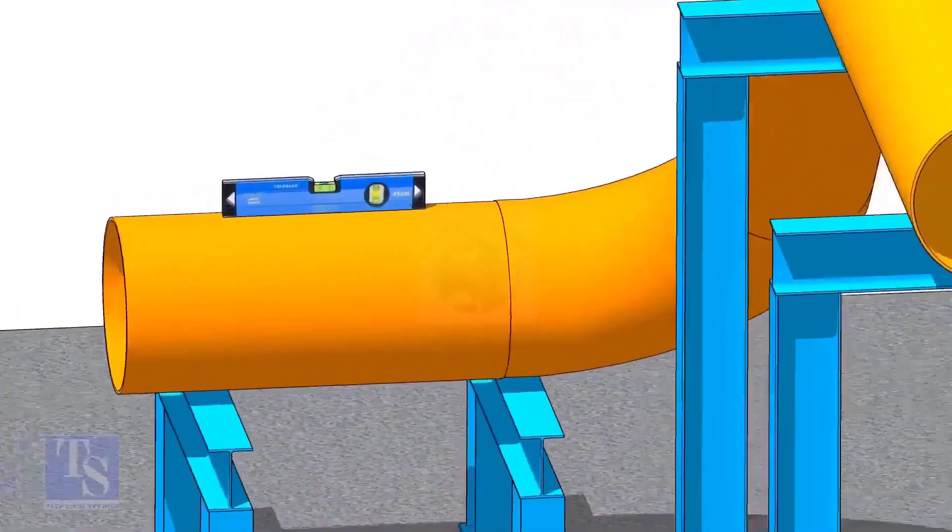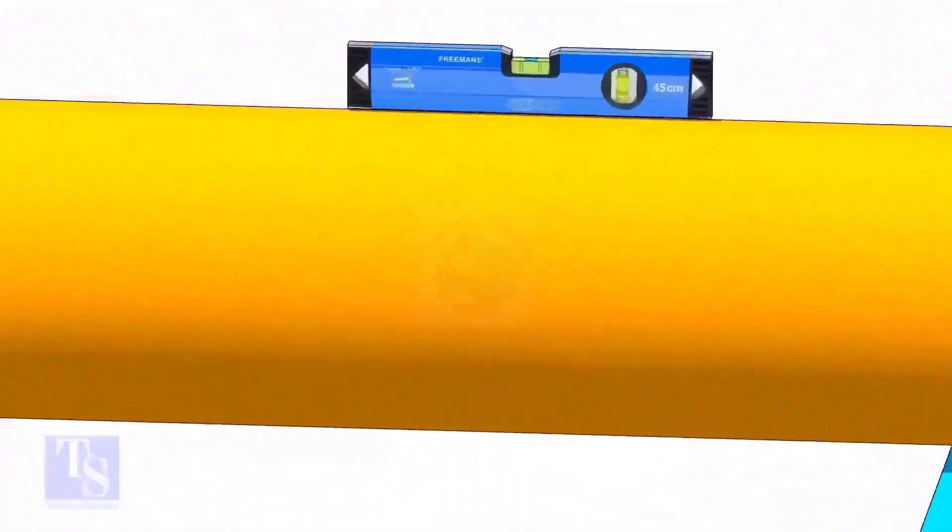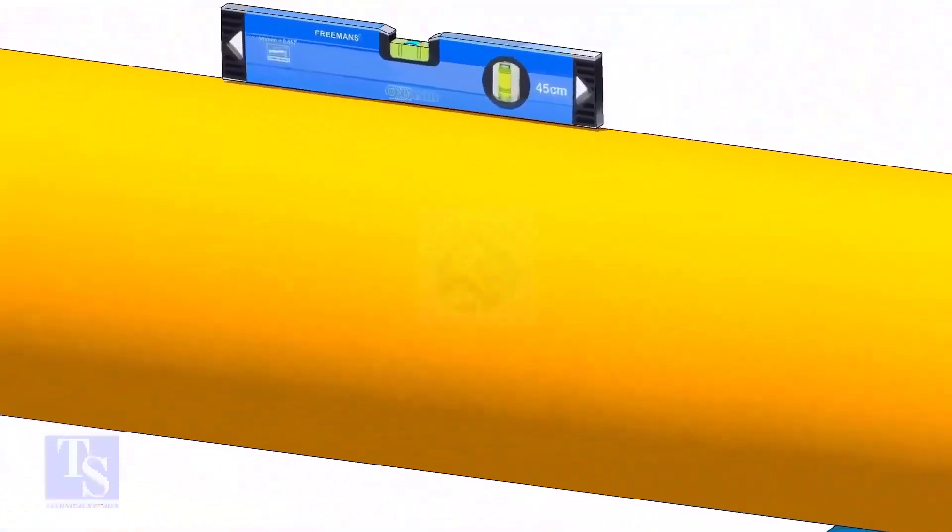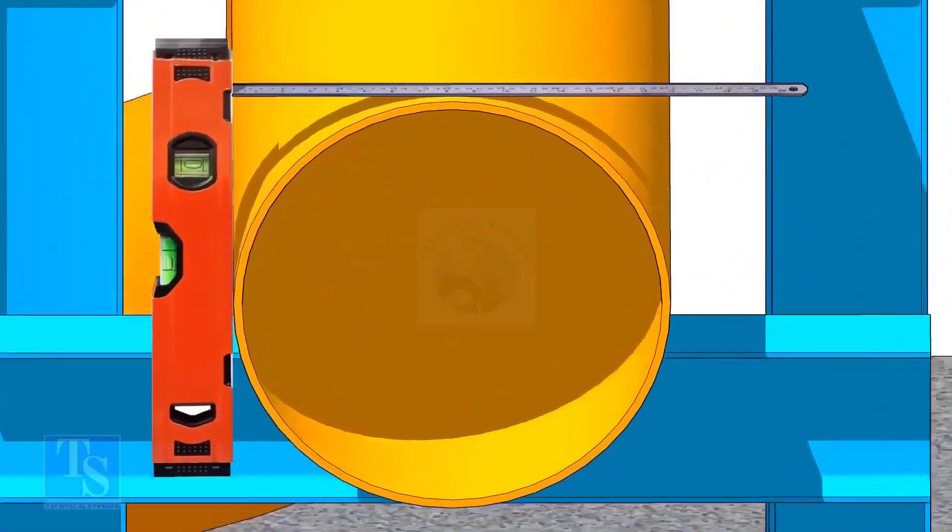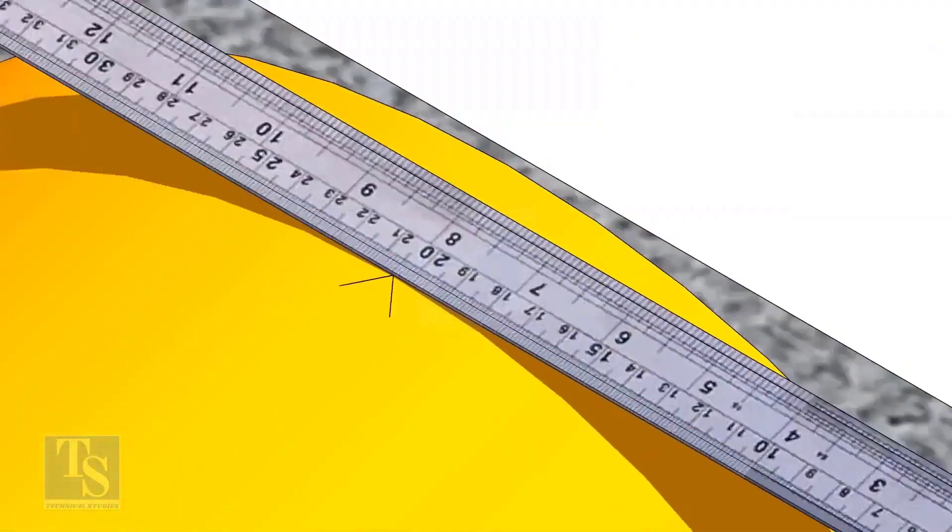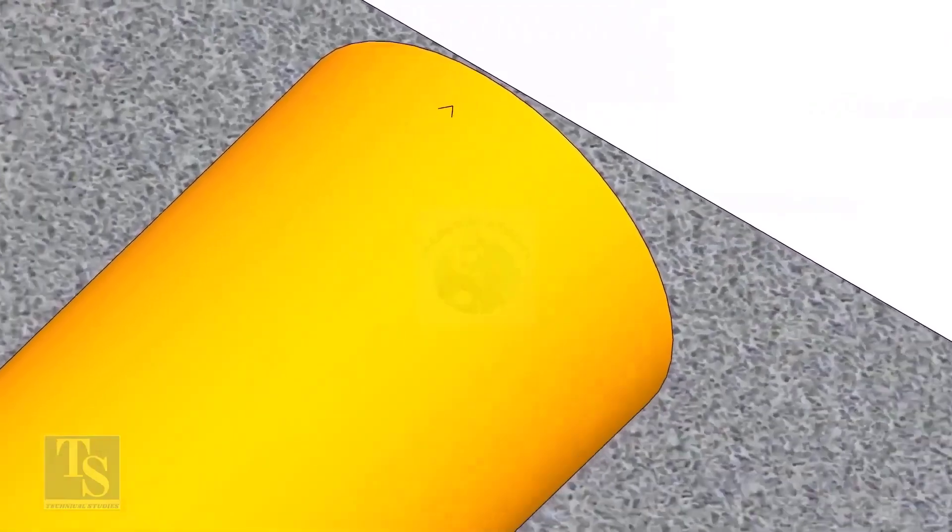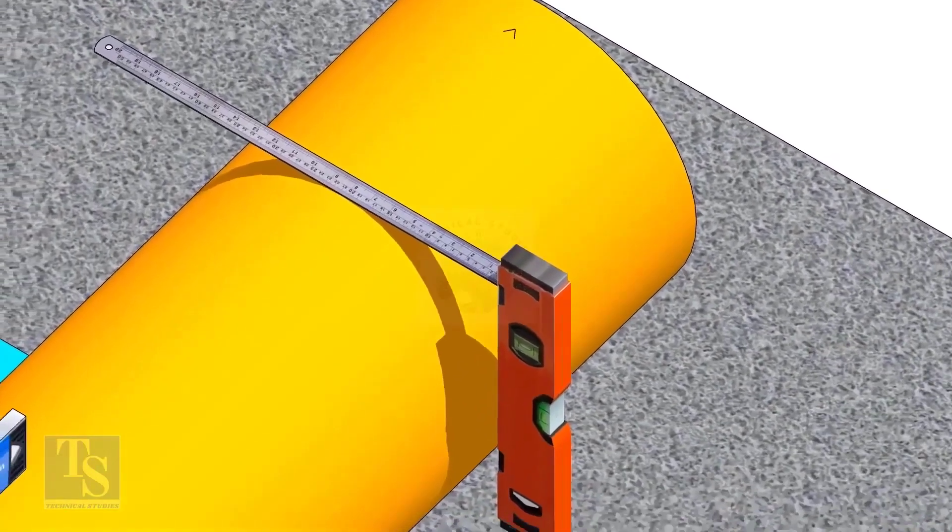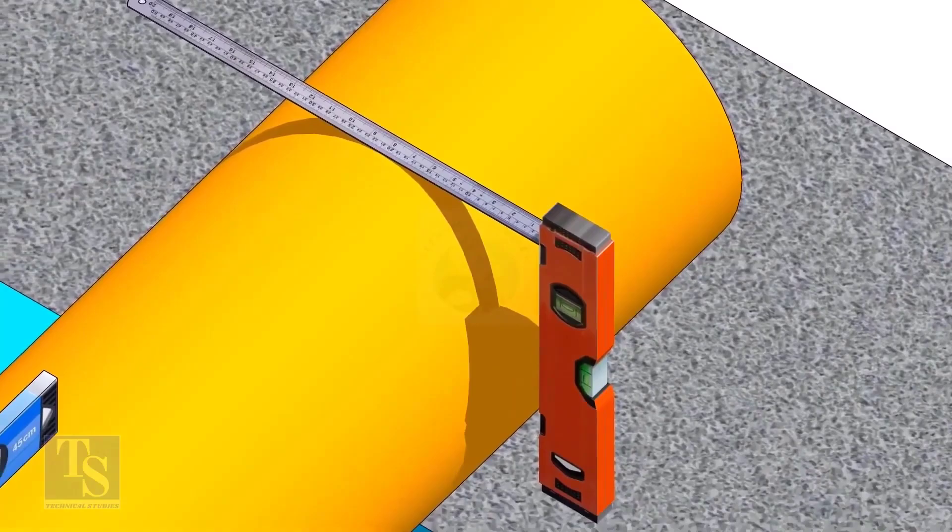After leveling the pipe, mark the center line. Don't forget to punch mark this line. Mark half OD at 300mm apart. This pipe OD is 406mm, so mark 203mm from the vertical level bottle, on the top of the pipe. And draw a line connecting these marks.